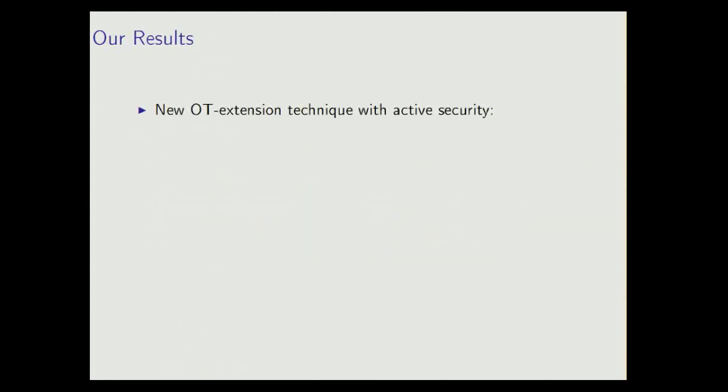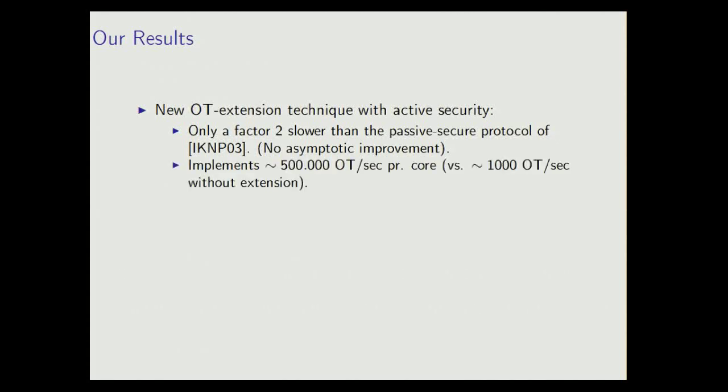Our results are that we get a new OT extension technique with active security. Now this technique does not improve what we know we can do asymptotically, but it gives us a more practical protocol, which is only a factor two slower than this passive secure protocol of Ishai et al. What this translates into is that we can implement this in Java, and we can get something like half a million OTs per second, per core.